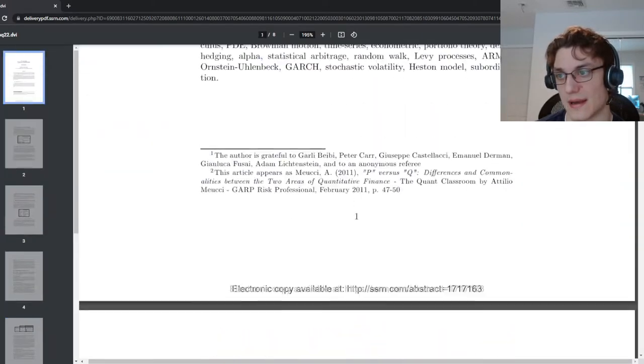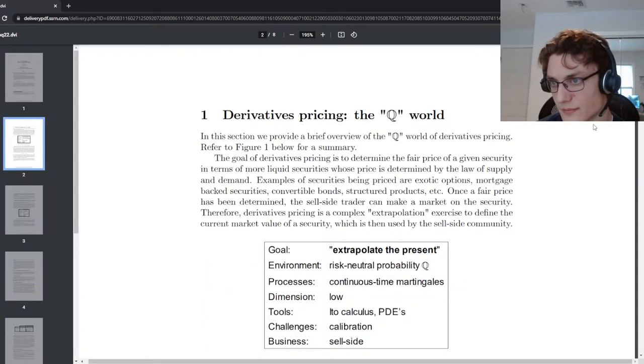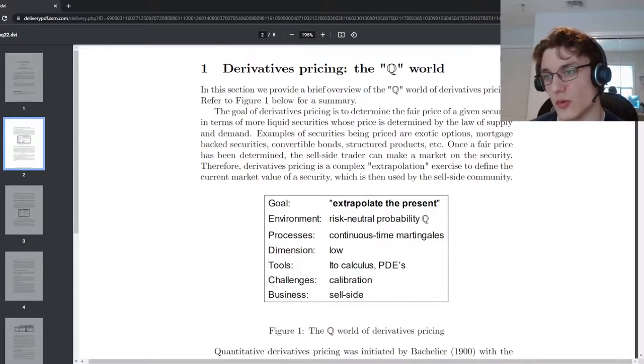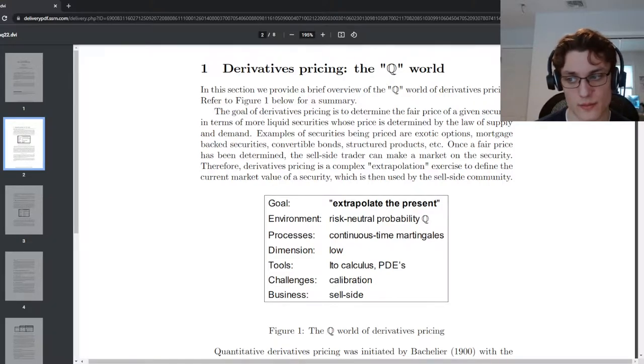So let's just start by the introduction to the Q world. So what is the Q world? Well, it's summarized by this nice table here. We have a goal, which is extrapolate the present. The environment is the risk-neutral probability Q. Processes are continuous time martingales. Generally, the dimensionality of this problem space is relatively low. The tools that we use are Ito calculus and partial differential equations. The main challenge is calibration. And the business is sell side. So I think that sums up the Q quant world very nicely.